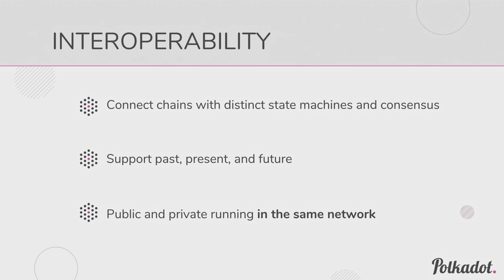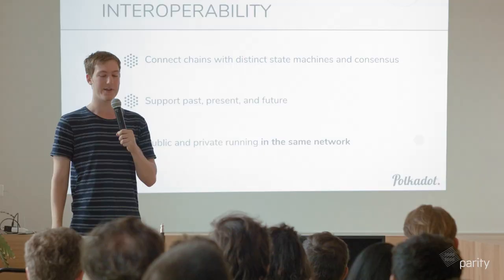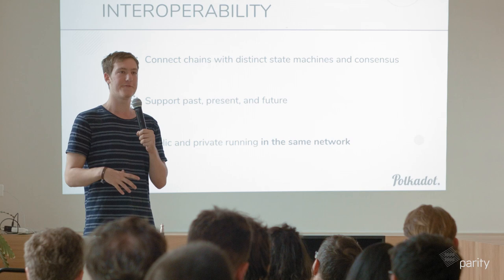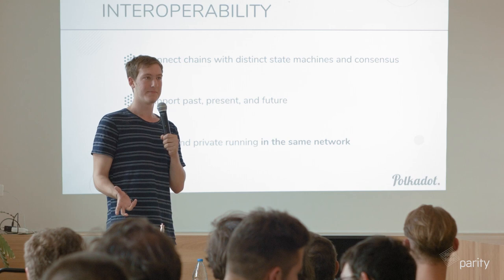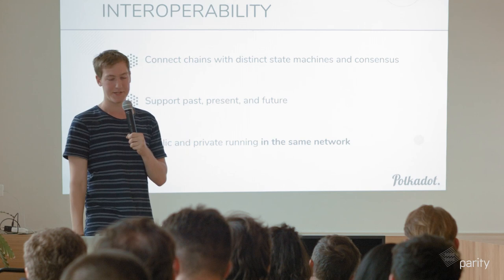Another motivation is supporting public and private chains running in the same network — public open permissionless chains combined with private permissioned consortium chains, where they don't have to give full control over their data to the public, but can still provide it and allow it to be passed into applications at that level.